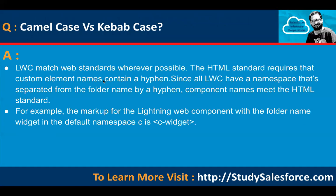What is the difference between camel case and kebab case? LWC matches web standards wherever possible. The HTML standard requires that custom element names contain a hyphen. Since all LWC have a namespace separated from the folder name by a hyphen, component names meet the HTML standard. For example, the markup for a Lightning Web Component with folder name 'widget' in the default namespace C is 'c-widget'. This is kebab case notation.